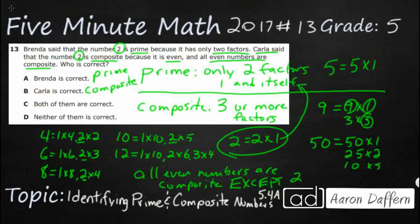Because look, 2 only has 2 factors, 1 and 2. So 2, that's prime. We'll whisper that. We don't want it to feel like it's not like all the other even numbers out there. But 2 is different. 2 is prime. So, can't be D, neither of them is correct. Kind of hard to make both of them correct. Carla is almost correct, but the correct answer is A, Brenda. 2 is prime.